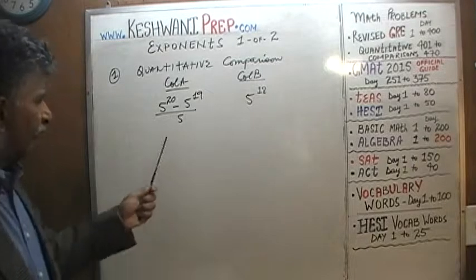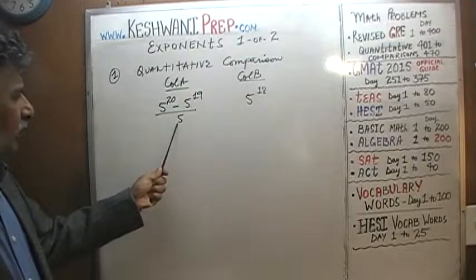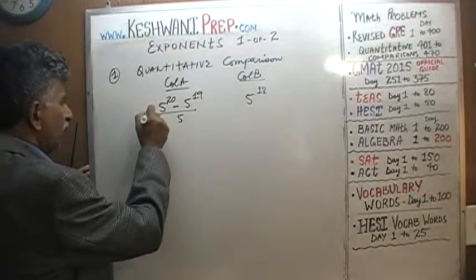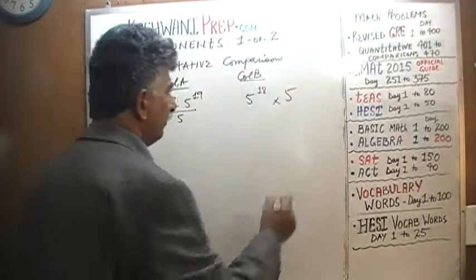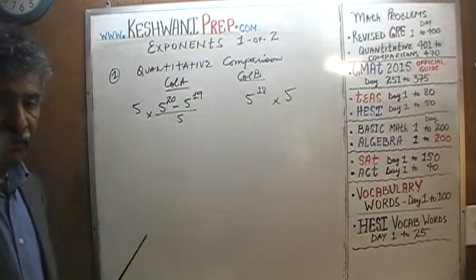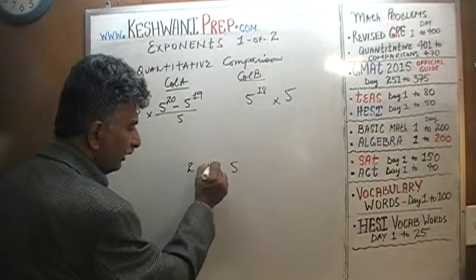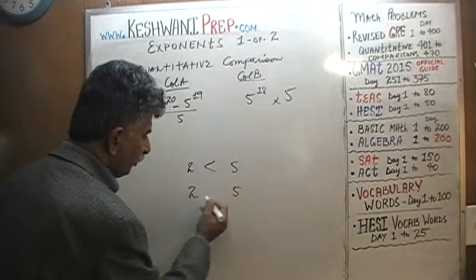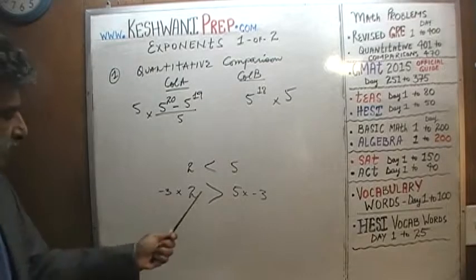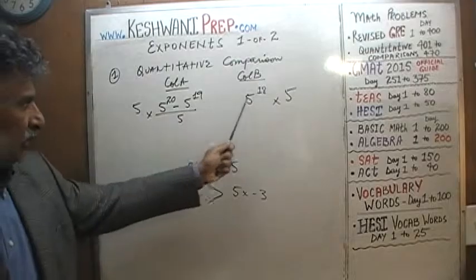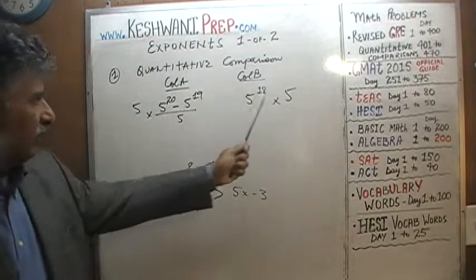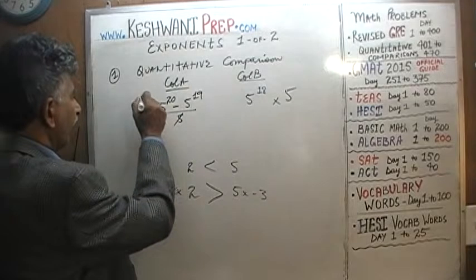First thing we want to do is get rid of this annoying denominator. Denominators are very annoying — if you find one, get rid of it as soon as you can. We multiply both columns by 5. As long as you're multiplying both columns by a positive number, you're fine. If you multiply by a negative number, it will change the direction of the inequality — for example, 5 is bigger than 2, but multiplying both by negative 3 reverses that. So we multiply both columns by 5 to clear the denominator.